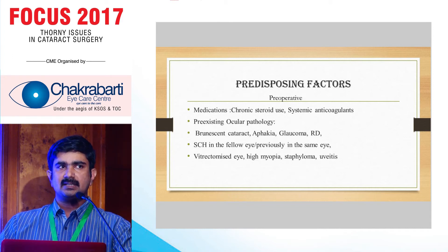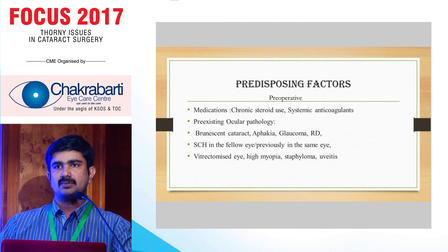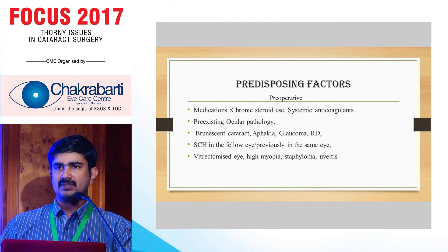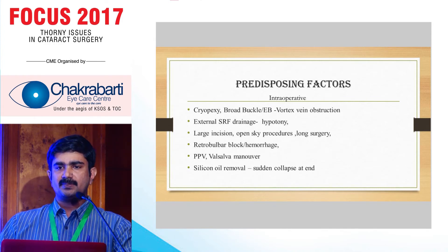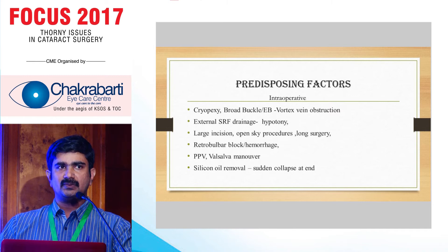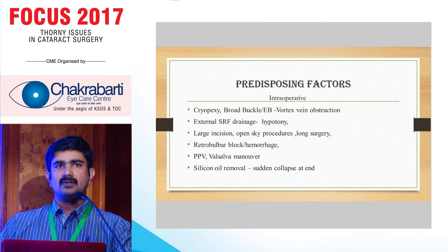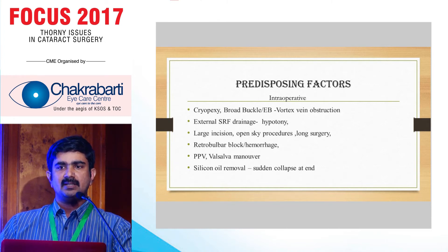In vitrectomized eyes and in high myopia, scleral rigidity is very low and the eye tends to collapse very fast, which can also cause suprachoroidal hemorrhage during surgery. Suprachoroidal hemorrhage in the fellow eye is another risk factor. Intraoperative predisposing factors include cryo: especially while doing a buckle, if you do cryo and remove the probe without proper thawing, you can fracture the scleral vessels in the intrascleral canal. External SRF drainage and scleral buckling with hypotony induced by drainage can also cause suprachoroidal hemorrhage.